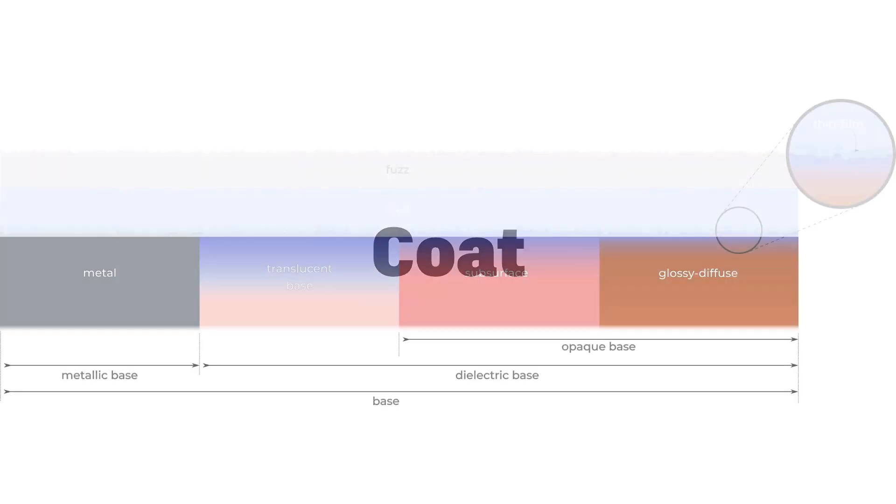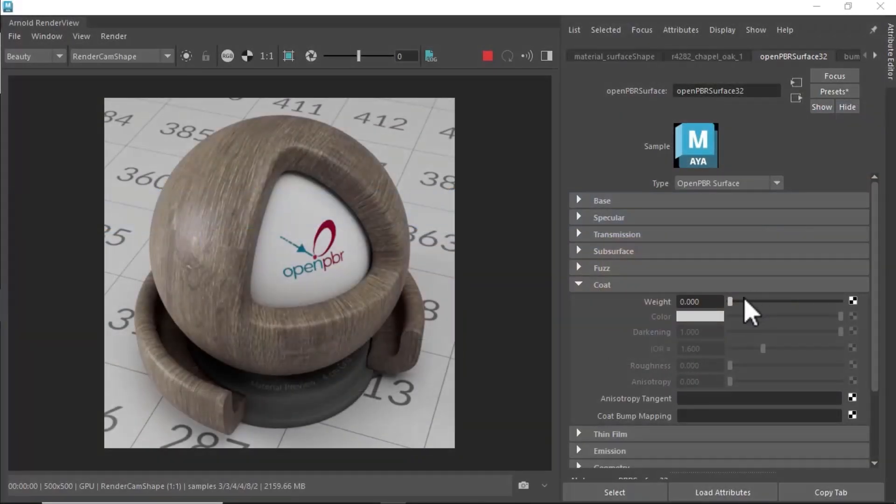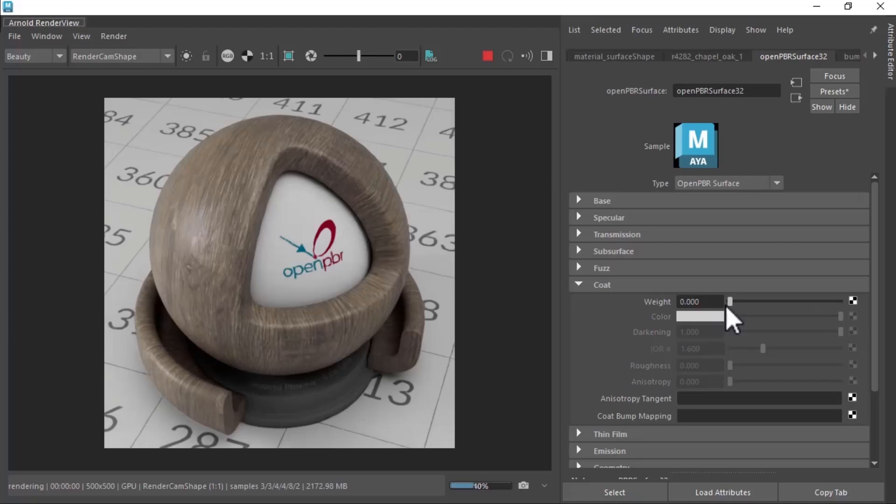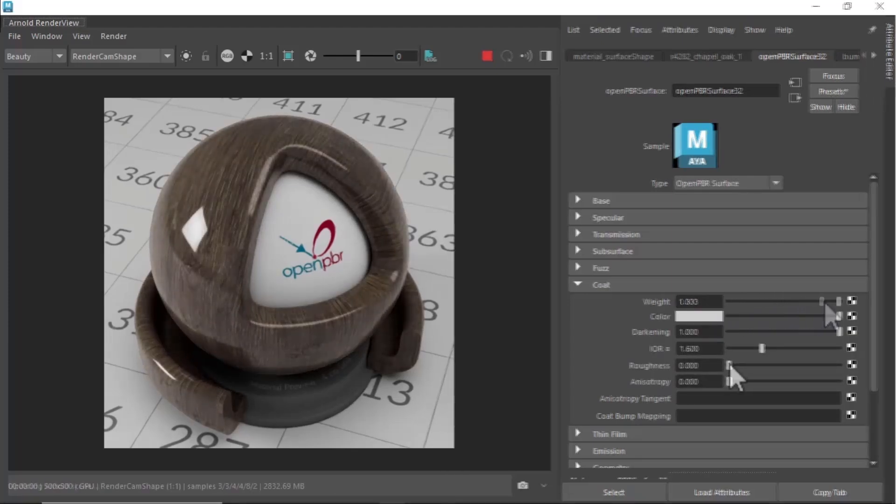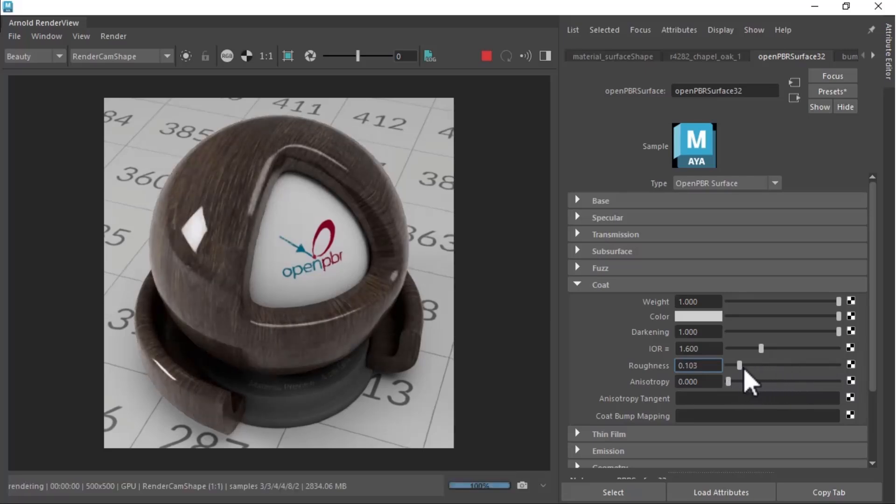So far, we have described the properties of the base substrate at the bottom of the material. On top of this base substrate sits an optional coat layer, which represents a thin layer of dielectric on top of the base. This is enabled by turning on the coat weight. Here is a wood base with no coat. When we dial the coat weight, the rough wood looks like it gets a varnish.